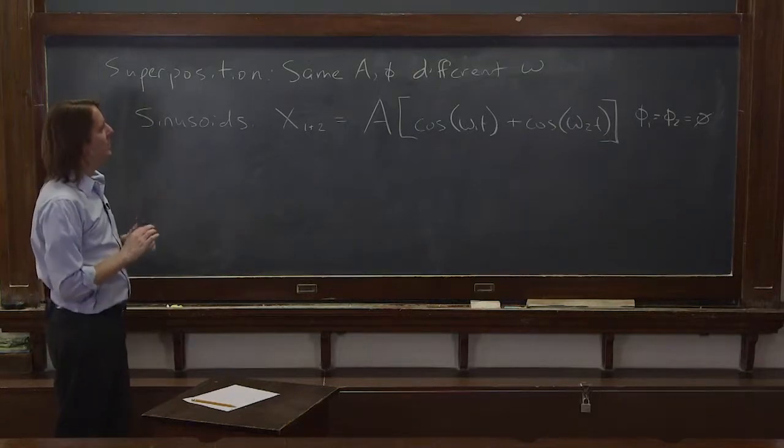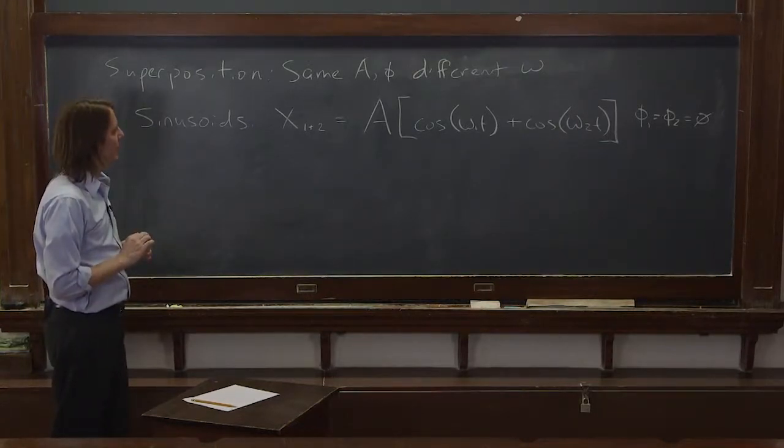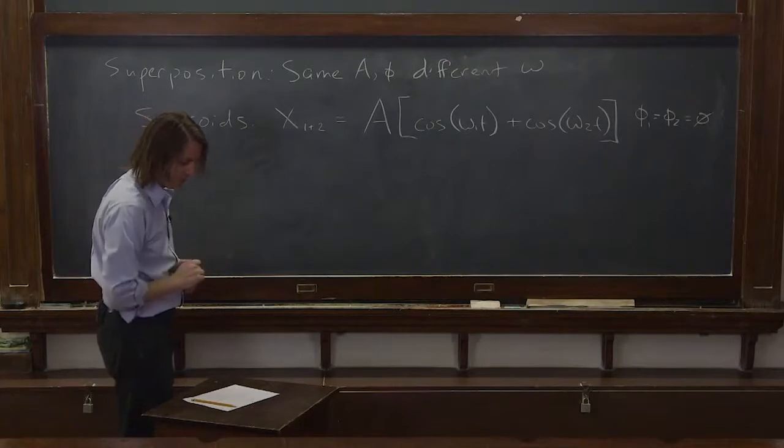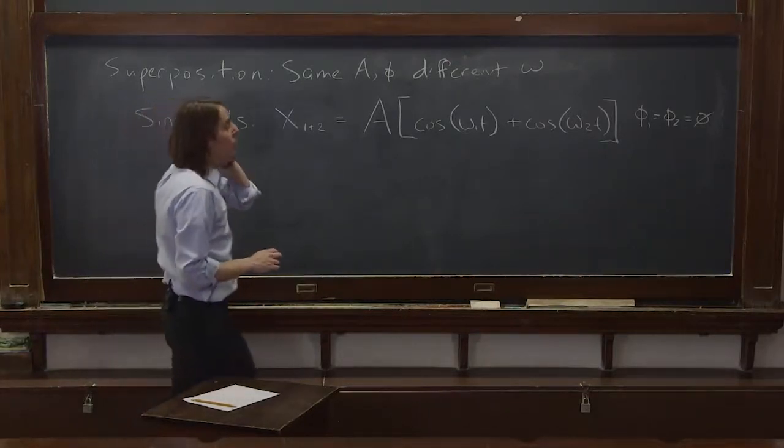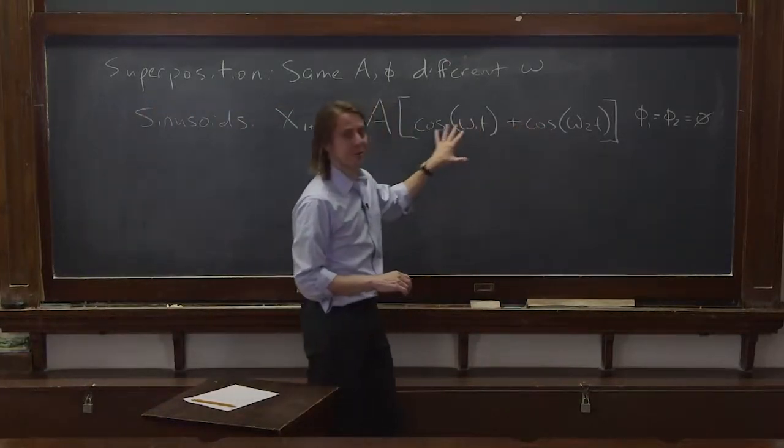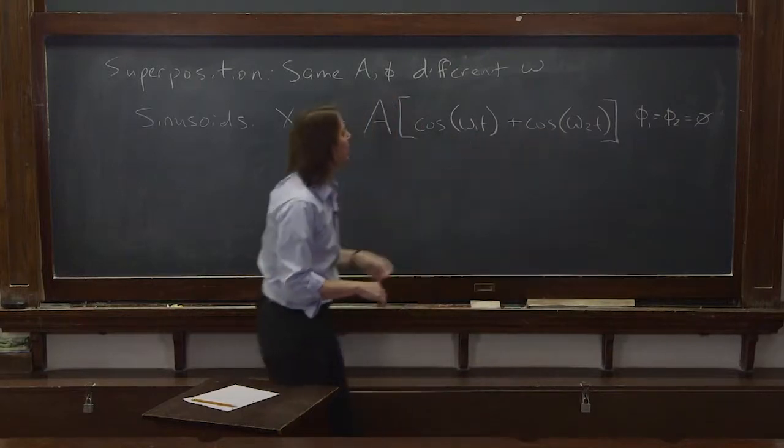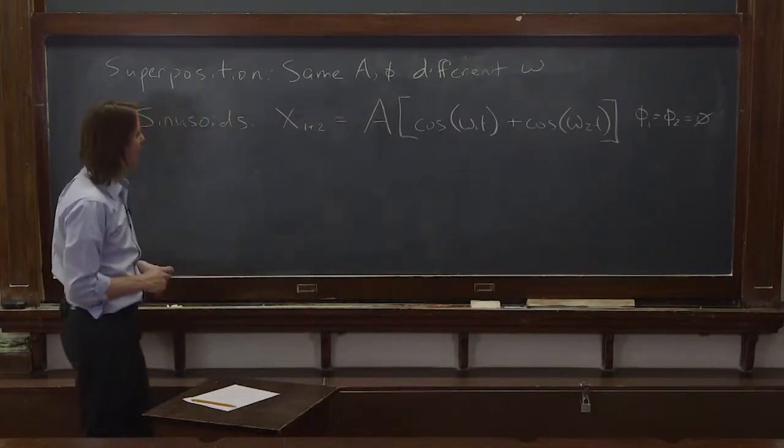But for now, in addition to the same phase, they have no phase. I can arbitrarily set it to whatever I want just by putting where time equals 0. Okay, so this expression is hard to simplify because we have two sinusoids with different numbers inside the argument.